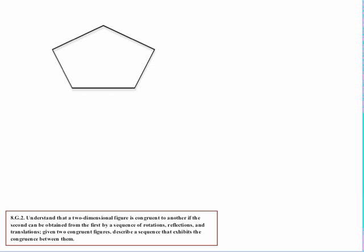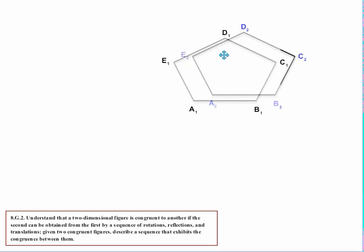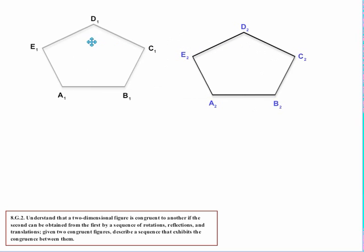Let's try another example of that combination using a pentagon, and we use technology to create a carbon copy. Again, what we need to do is label all the different vertices to know what matches with what, and then we simply do a translation — slide it over — and see that yes, they're congruent. I can get one to fit exactly over the other.